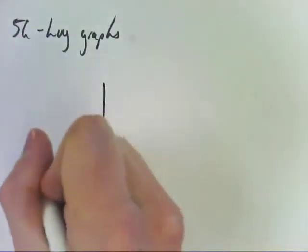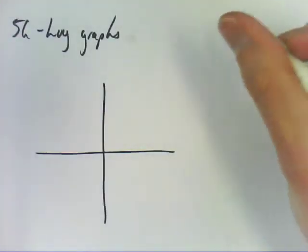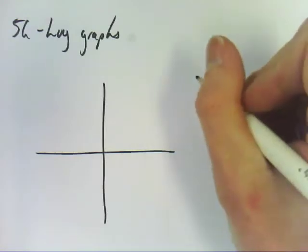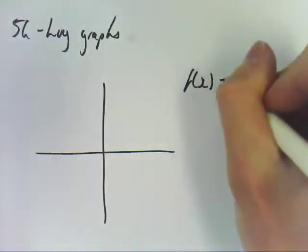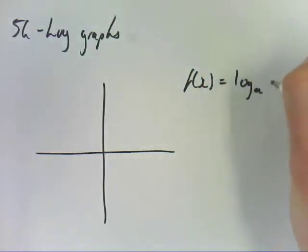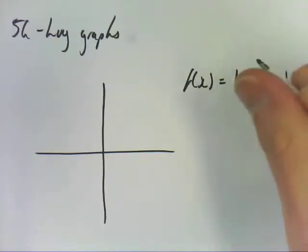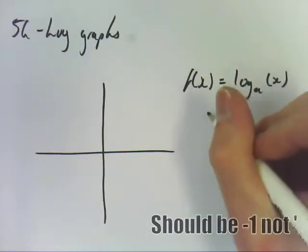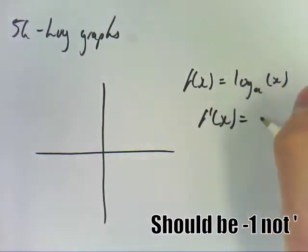Log graphs are the inverse of exponential graphs. So if f(x) equals log_a(x), then f'(x) equals a to the x.